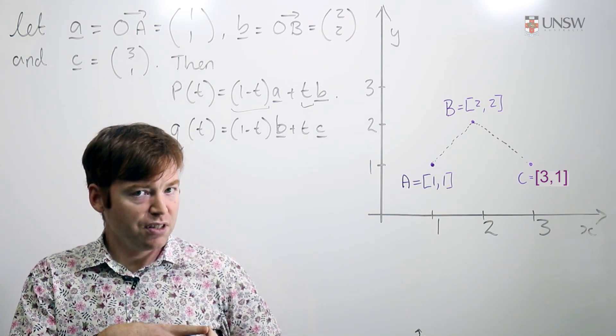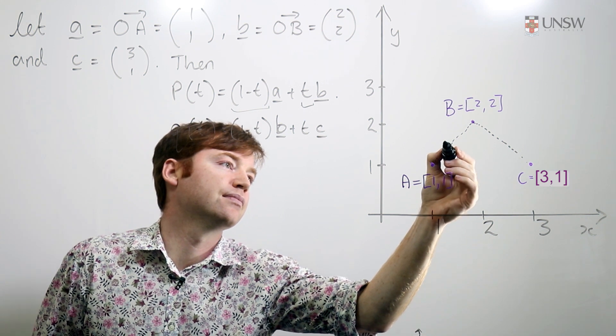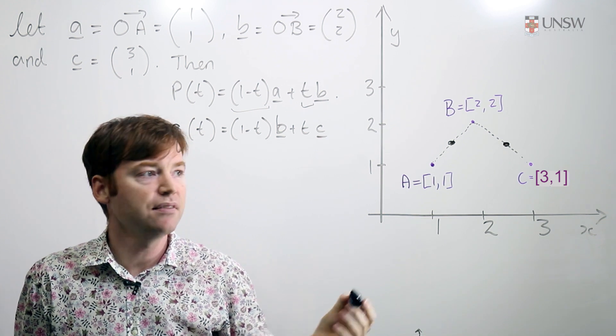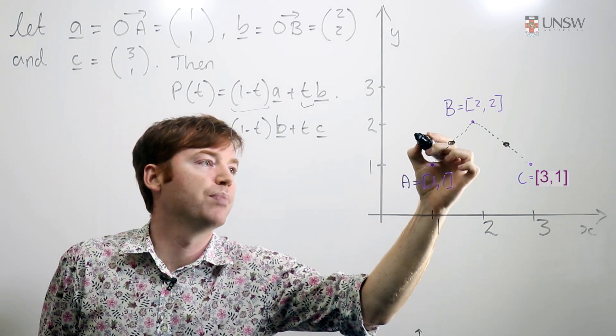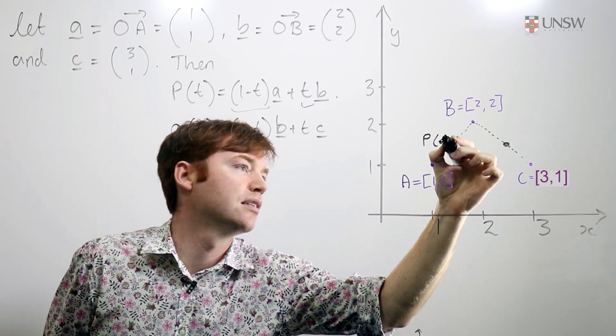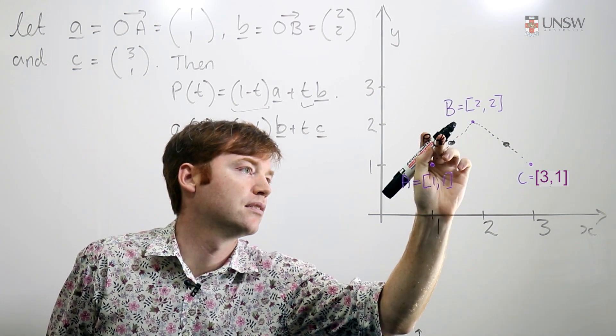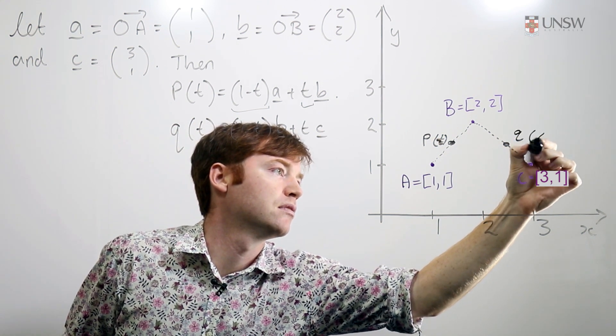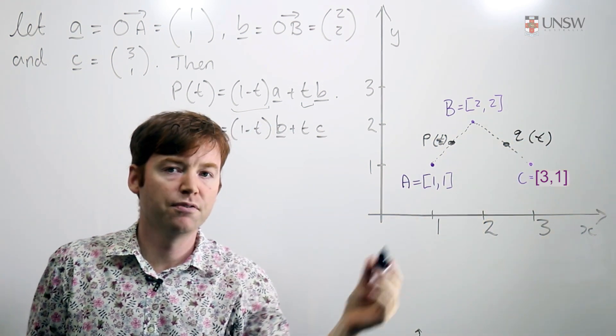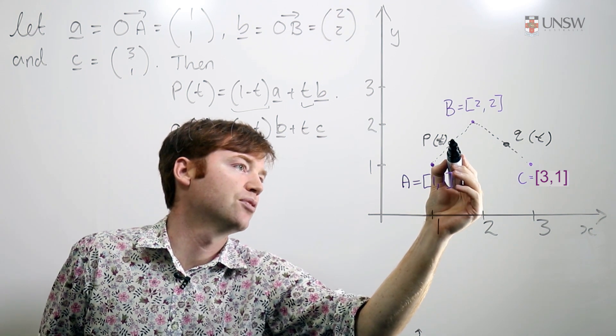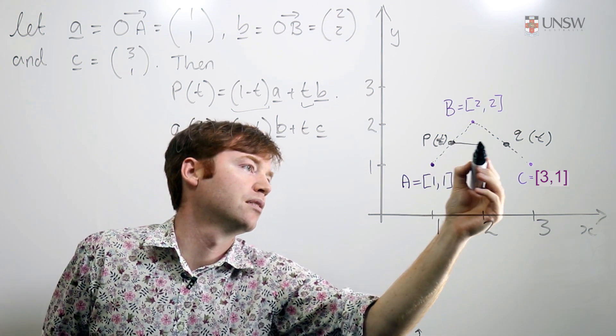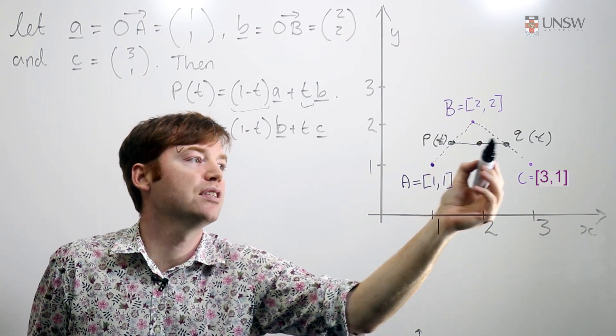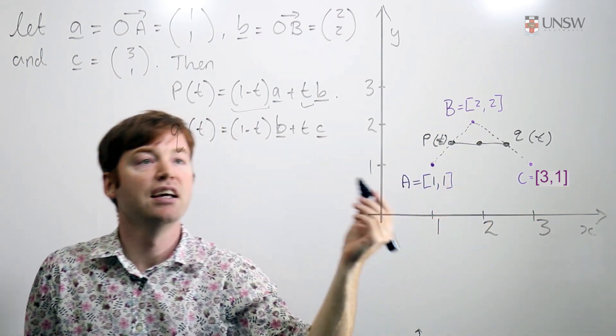Now we're going to combine them. So at a particular time t, here's my p of t, here's my q of t for a particular time t. And I can also describe a point which is moving along this line, or I can also describe this line in the same way. R of t can be...